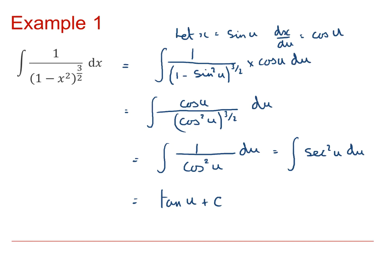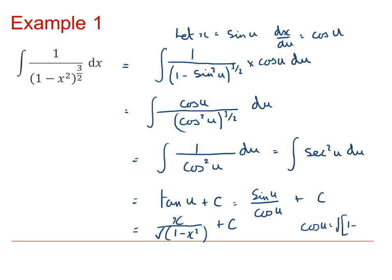We've got to get this back to an expression in terms of x. We use the fact that tan(u) equals sin(u) over cos(u), so this is equal to sin(u) divided by cos(u) plus c. Since x equals sin(u), the top line is x. And cos(u) equals the square root of 1 minus sin²(u), so the bottom line is the square root of 1 minus x squared.